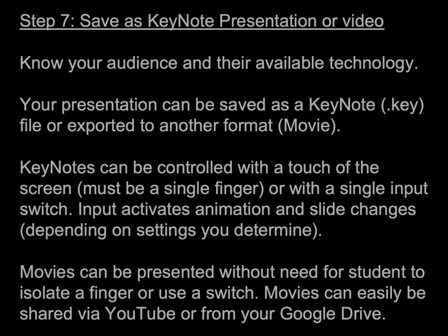Step 7: Save as Keynote presentation or video. Know your audience and their available technology. Your presentation can be saved as a Keynote .key file or exported to another format such as Movie. Keynotes can be controlled with a touch of the screen — must be a single finger — or with a single input switch. Input activates animation and slide changes depending on the settings you've determined. Movies can be presented without need for the student to isolate a finger or use a switch, and can easily be shared via YouTube or from your Google Drive.